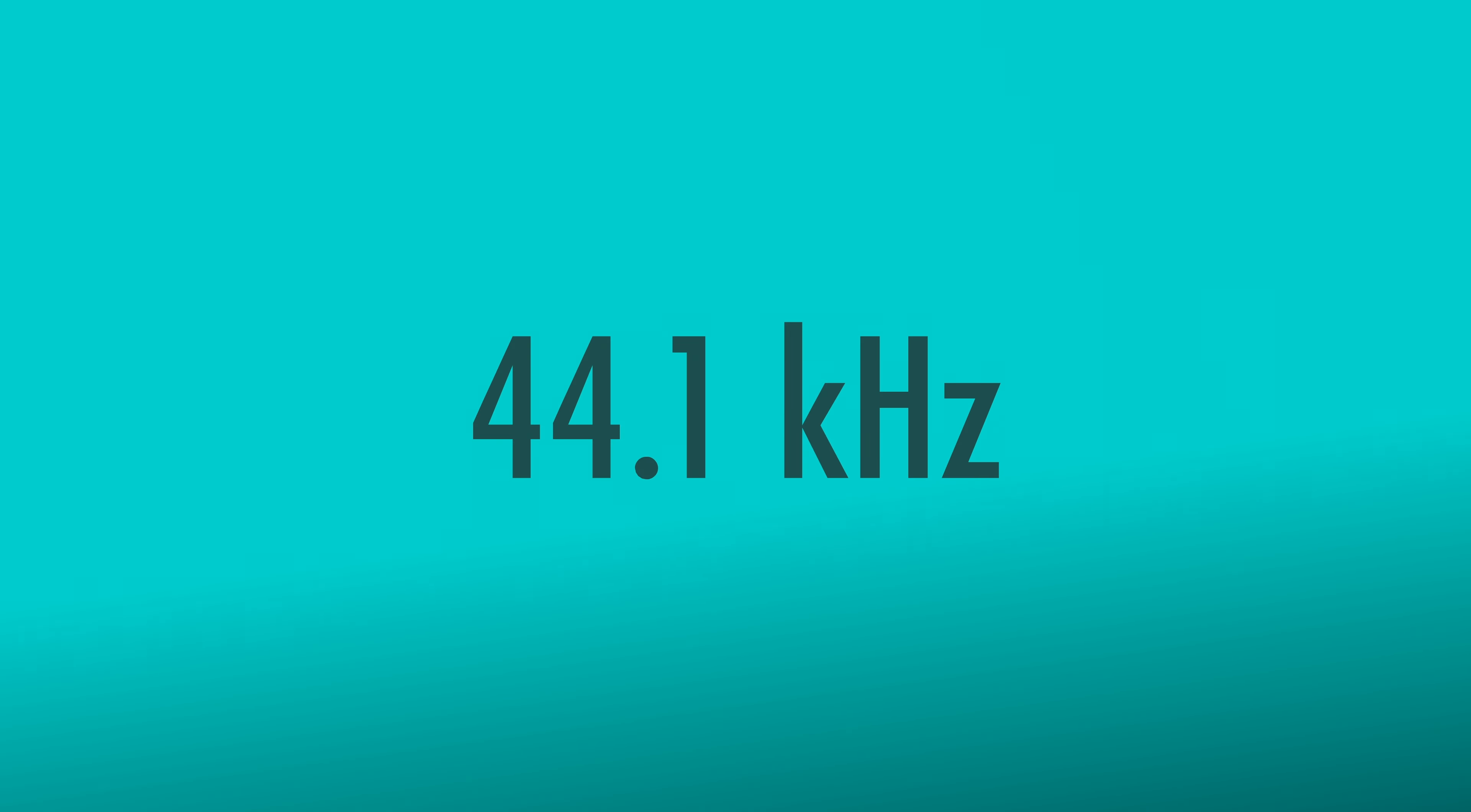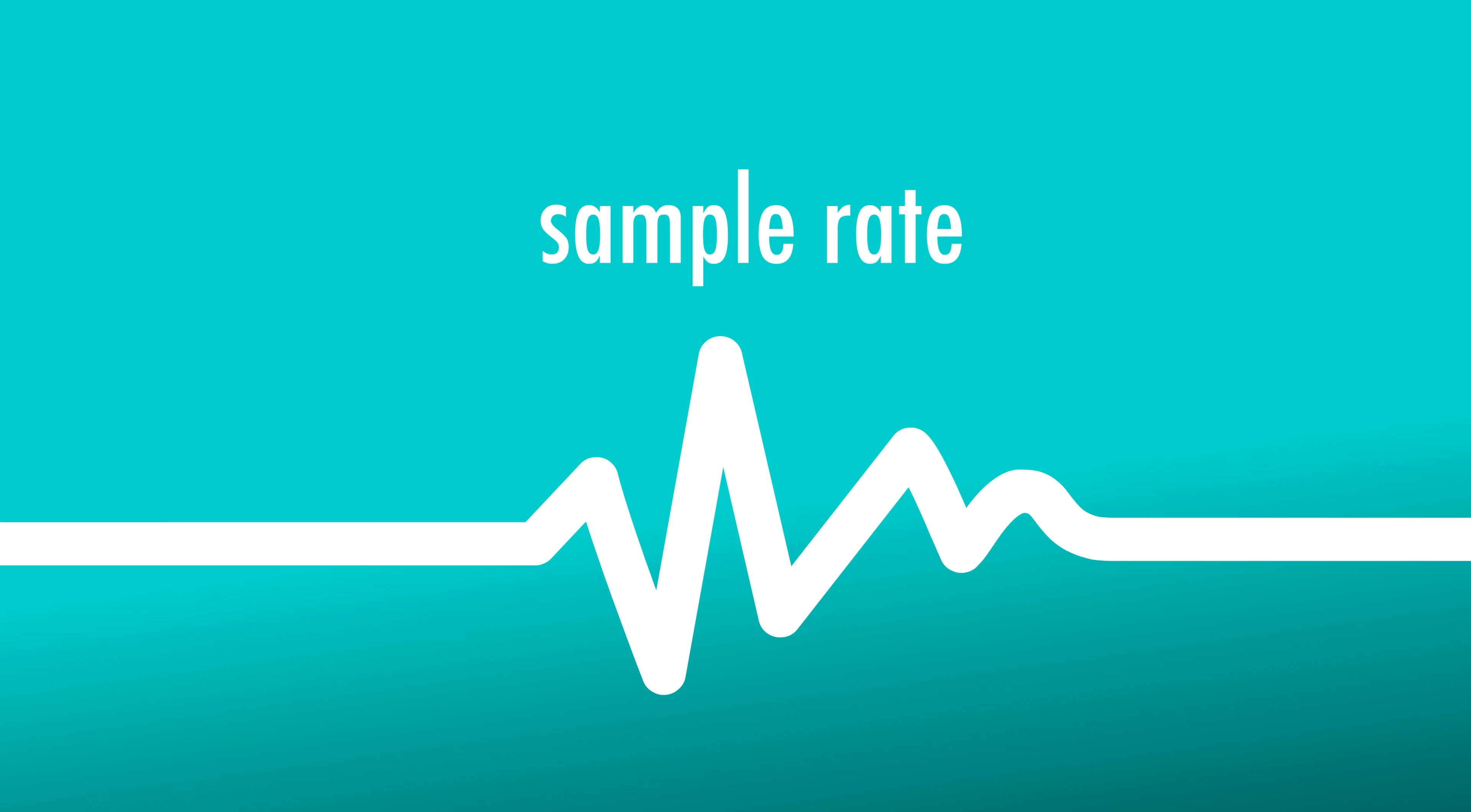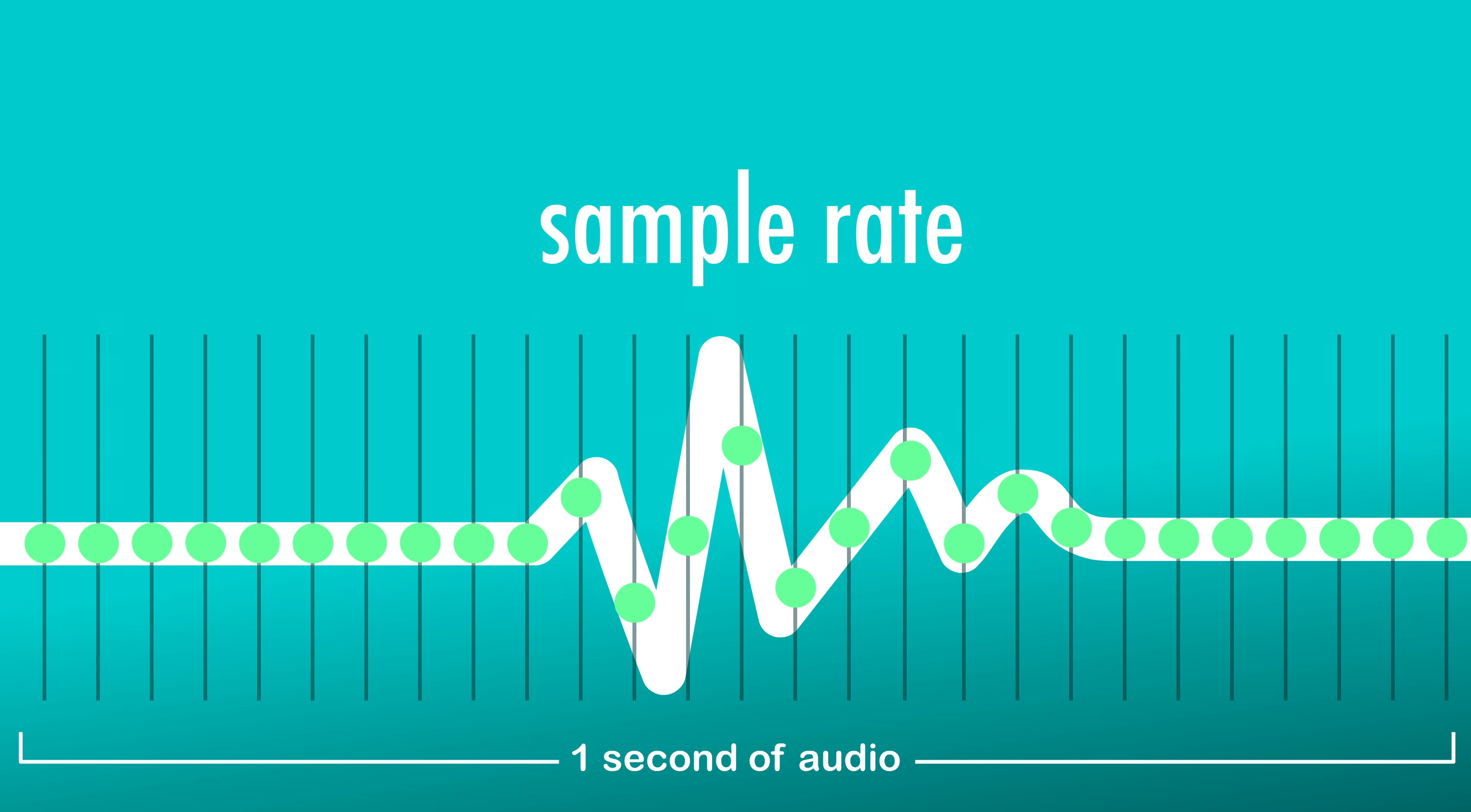44.1 kilohertz is a standard sample rate for digital audio such as CDs, MP3s, and so on. That means that the A to D samples the analog signal at least 44,000 times a second.